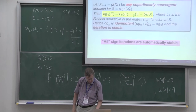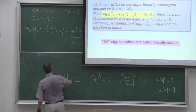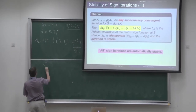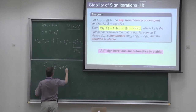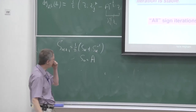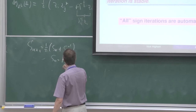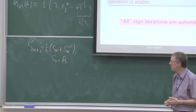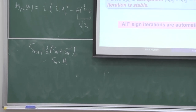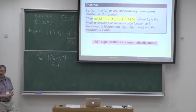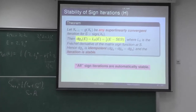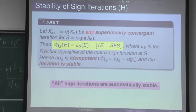What about the sign iteration? Going back to the matrix sign iteration: s_{k+1} equals half (s_k plus s_k inverse), with s_0 equal to A. Is that iteration stable? When I was writing my book, I asked myself that question and realised nobody in the quite large sign-function literature had ever discussed stability of this iteration. Clearly it's always stable in practice, and nobody even questioned whether you could prove it was stable.